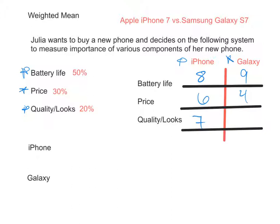With weighted means, you multiply the percentages times however much you rated it. For the iPhone, if she's going to give 50 percent of the weight to battery life and she gave that an 8, plus 0.3 (30 percent) times the price, which she gave a 6.